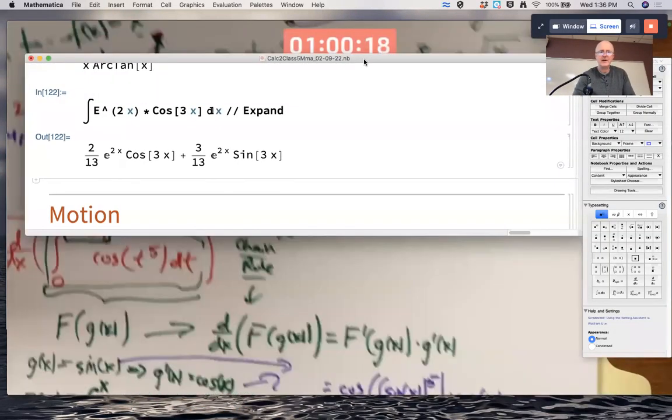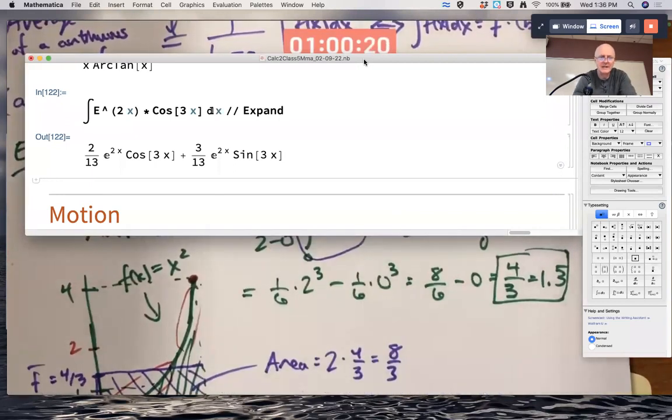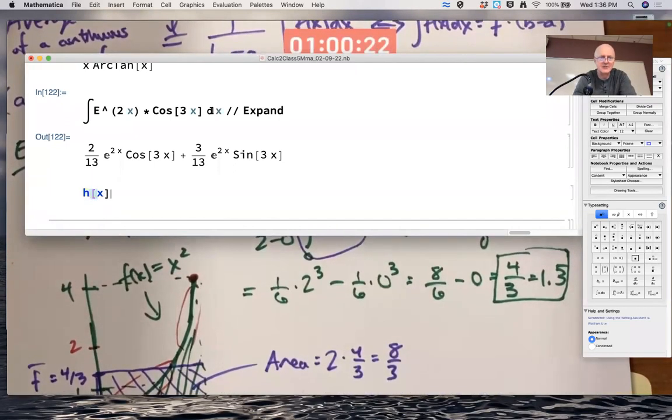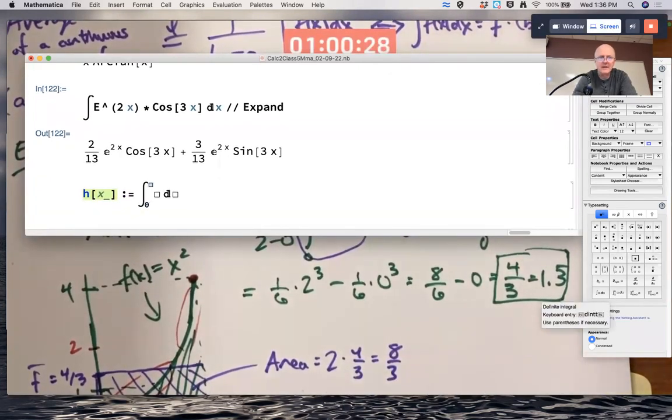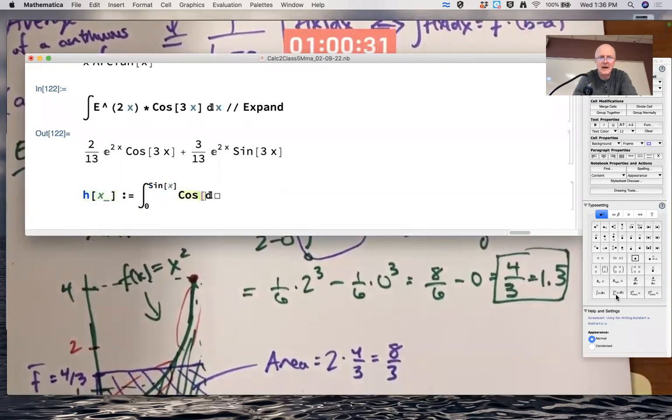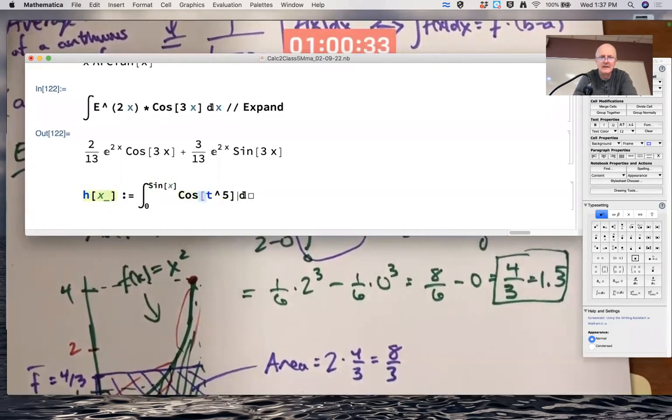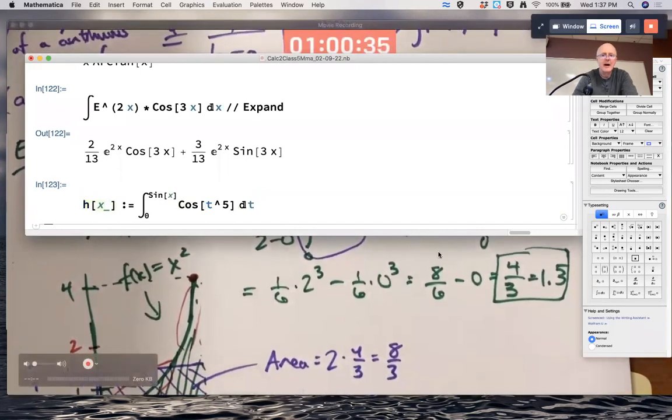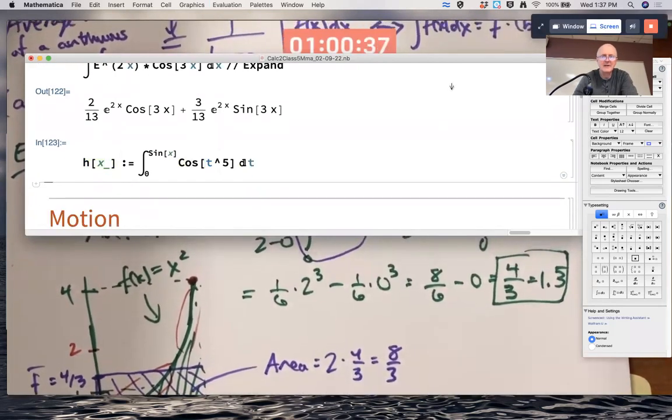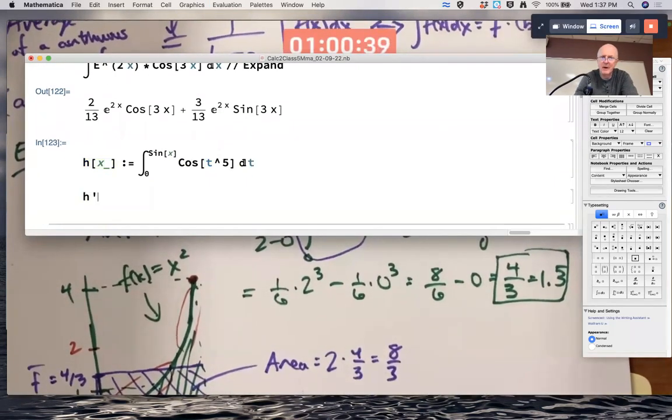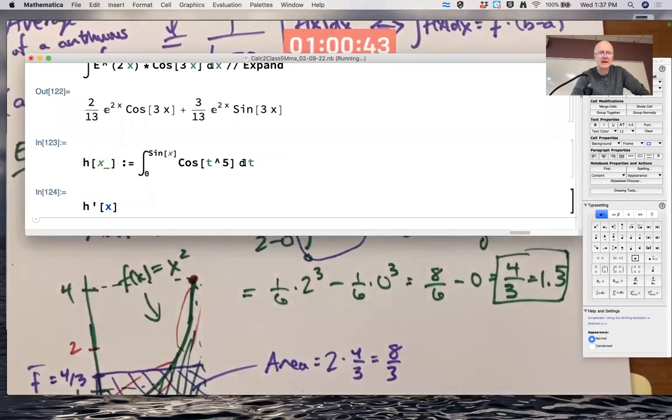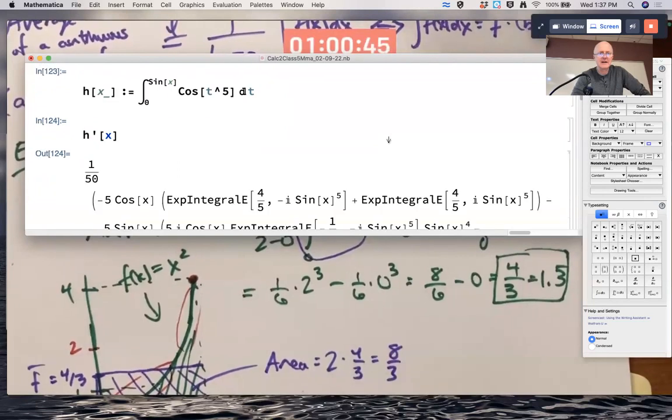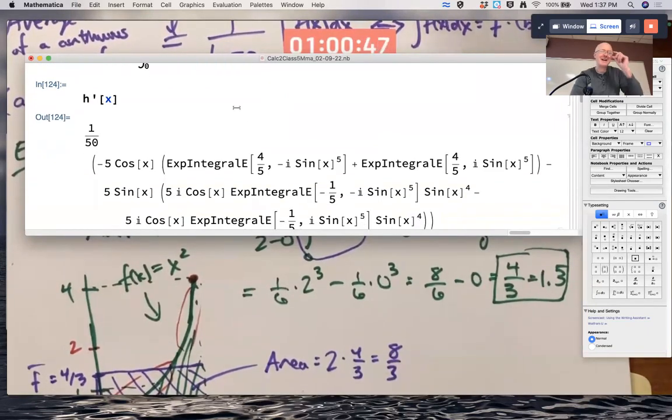I think, if I recall correctly, Mathematica can differentiate an integral. Let me call the integral H of x, just to use a different letter. 0 to sine x of cosine of t to the fifth dt. So I'm defining H of x there. I think Mathematica will find H prime of x. I might be wrong, but I think it works.